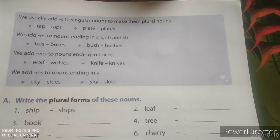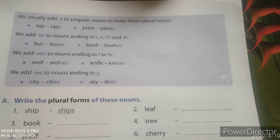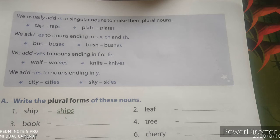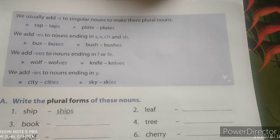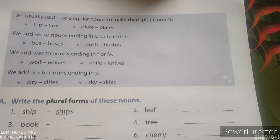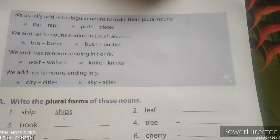बहुत सारे ऐसे words होते हैं जिनमें 's', 'x', 'ch', और 'sh' लगा हुआ होता है. कुछ nouns के अंत में हम 'es' का उपयोग भी करते हैं जहाँ पर 'f' या 'fe' लगा हुआ होता है. जैसे wolf — wolves, knife — knives. Wolf मतलब भेड़िया और wolves मतलब कई भेड़िये, knife एक चाकू और knives मतलब बहुत सारे चाकू.